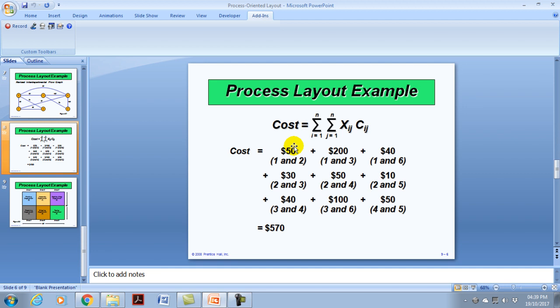So in the schematic shown before, we look at the movement between one and two, assembly and painting. They are close by to each other. It was fifty loads that were moved, multiply by one dollar, gives us fifty dollars for the cost of movement between one and two, department one and two, in that week.